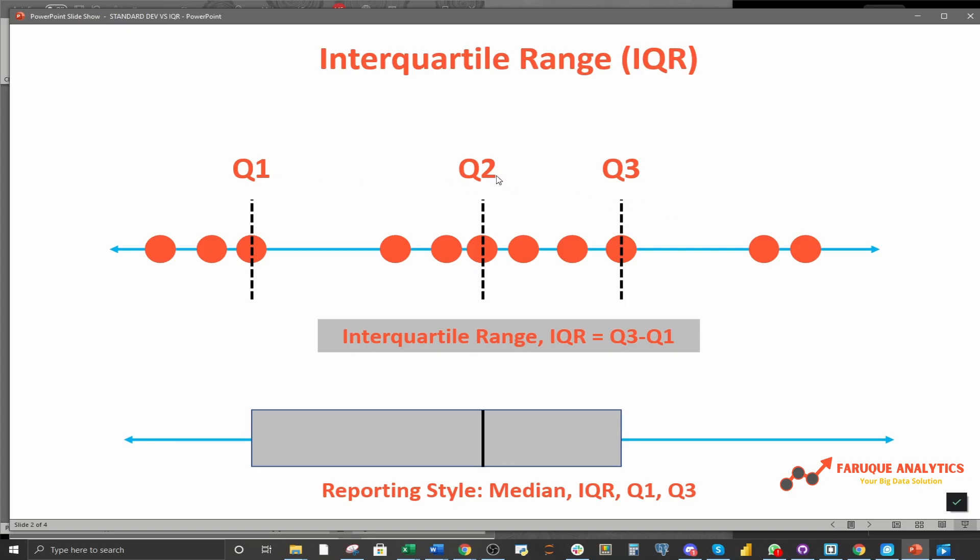Once you have Q1, Q2, and Q3, now you can proceed to calculate the interquartile range, IQR, which is Q3 minus Q1. This essentially gives you the distance or the spread between Q3 and Q1. Knowing the value of Q1, Q2, and Q3 will help you get a sense of how spread out your data is, even when the data is not evenly spread on each side of your median. Notice how one side is a little bit longer than the other.